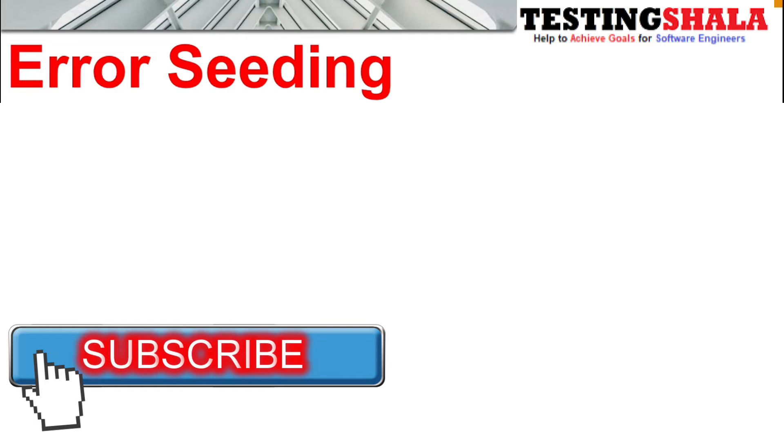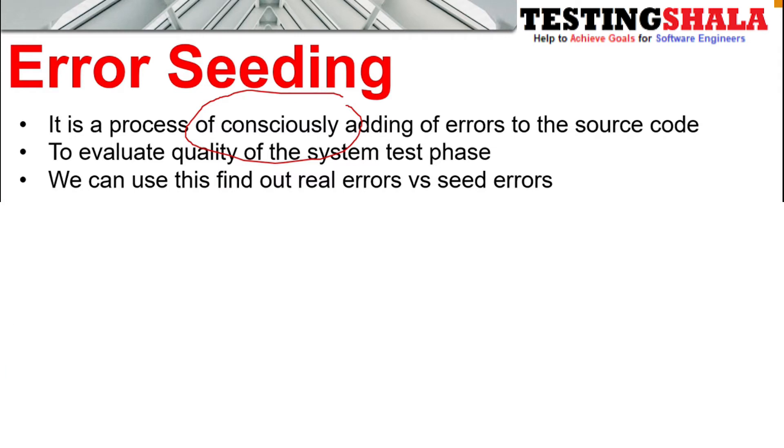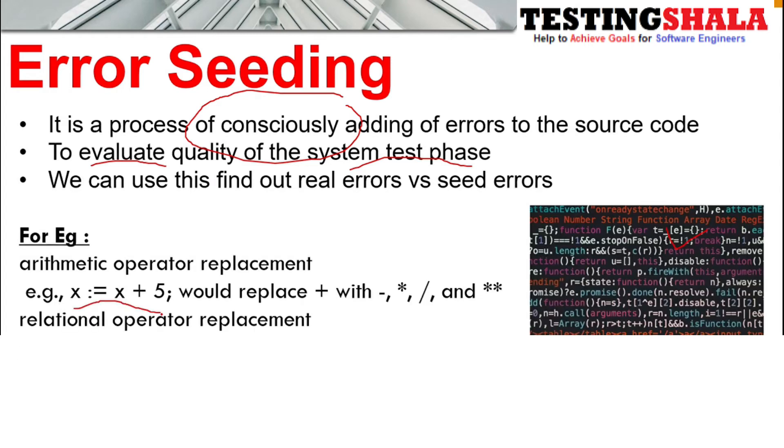Then we will learn about error seeding. What is error seeding? Error seeding is a process where the developer will consciously add errors to the source code to evaluate the quality of the application post system testing.